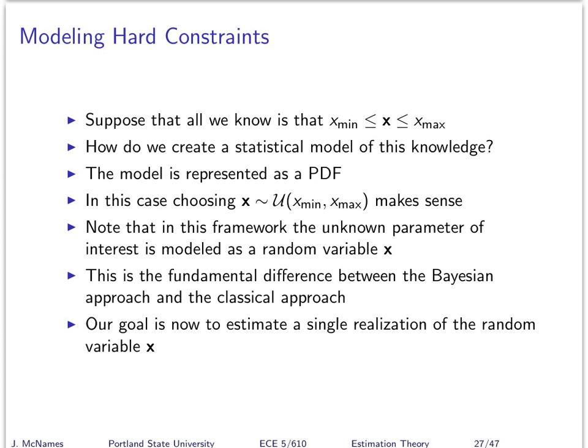So once again, we've switched to thinking about the thing we're trying to estimate as a random variable, not merely some unknown number. It's a random variable — and that's the key distinction between this and classical estimation theory.